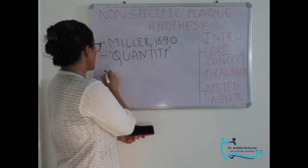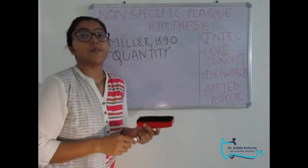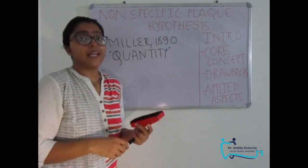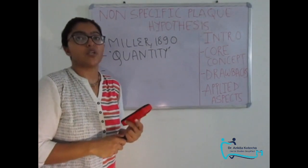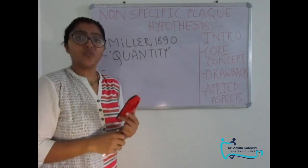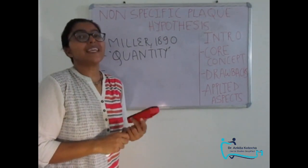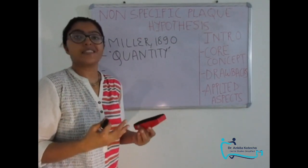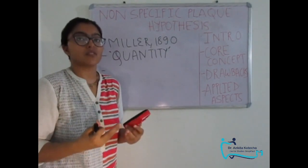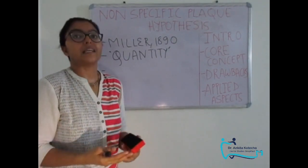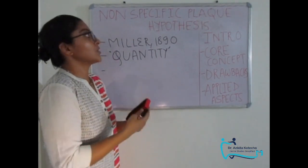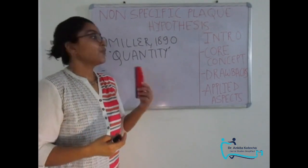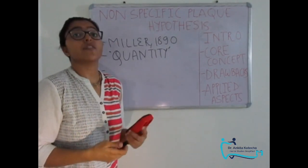Coming to the contradictory findings — the drawbacks associated with this hypothesis. Number one: patients presented with lots of plaque, calculus, and gingivitis as well, but never developed periodontitis. And patients who did develop periodontitis showed site specificity, meaning certain teeth and certain sites showed full-fledged disease activity whereas other sites were absolutely disease-free or clinically healthy. If we accept this hypothesis, how do we justify these contradictory findings?